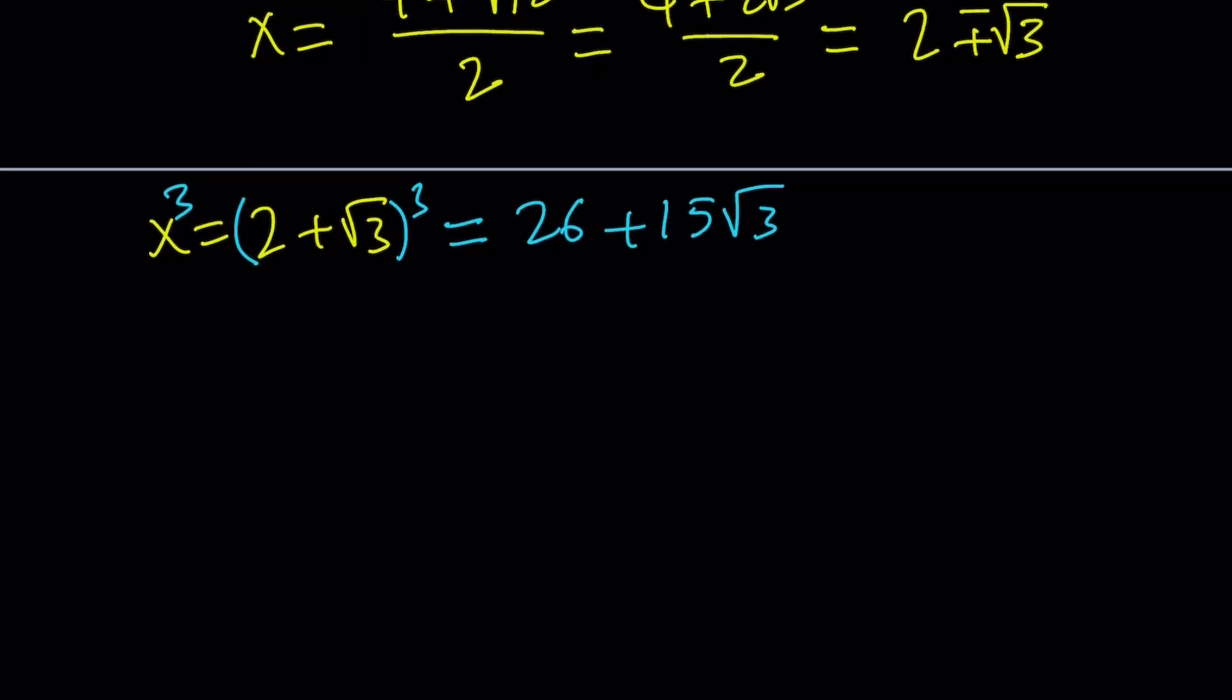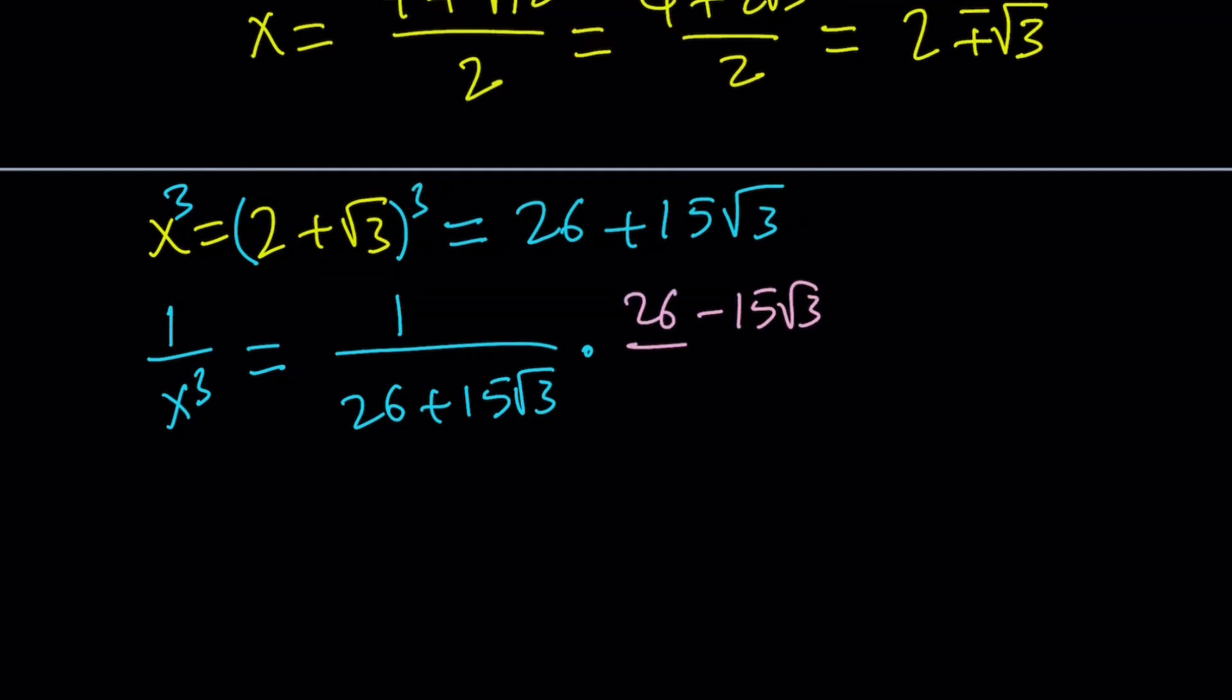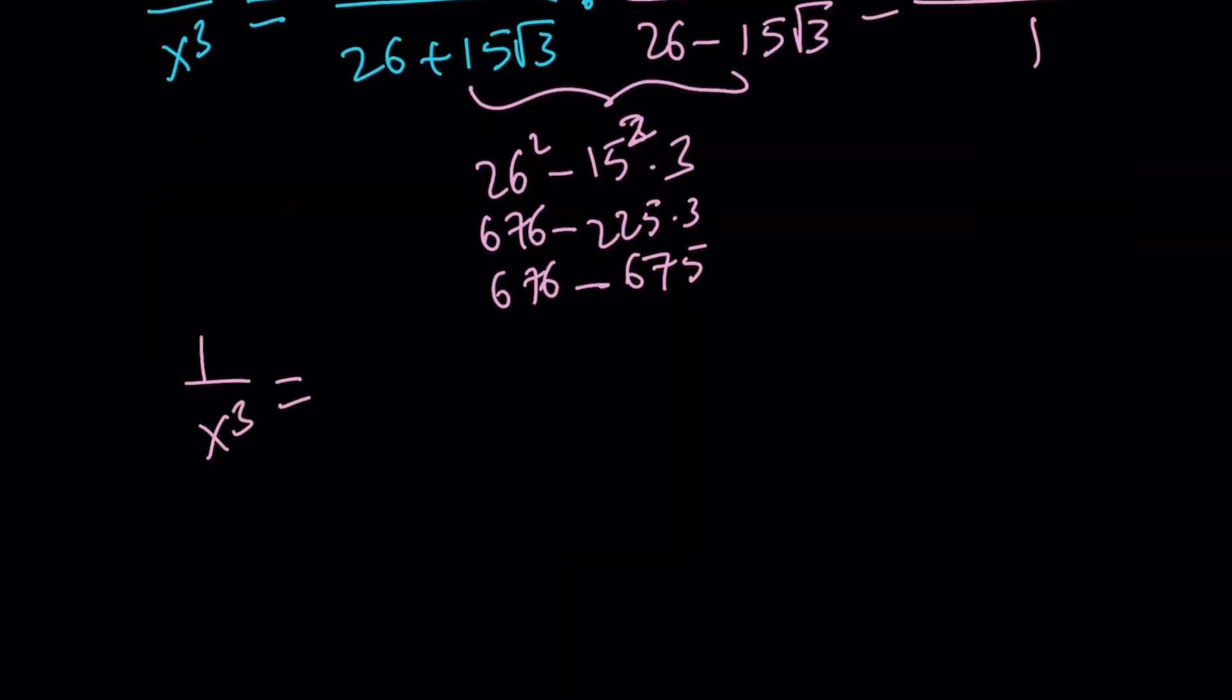So what about 1 over x cubed? Since we're going to add those, 1 over x cubed is just going to be the reciprocal of this. And then we can now rationalize the denominator. Multiply by 26 minus 15 root 3 and divide by that. The top becomes 26 minus 15 root 3. From difference of two squares, the bottom becomes 26 squared minus 15 squared times 3. 15 squared is 225 times 3, and 26 squared is 676. So it's like 676 minus 675. So in other words, this is going to be 1, which means the answer is 26 minus 15 root 3.